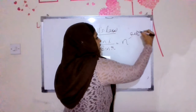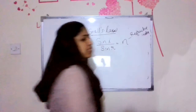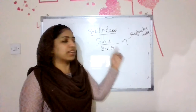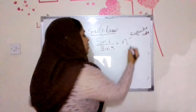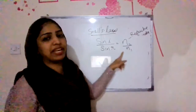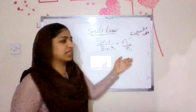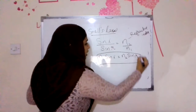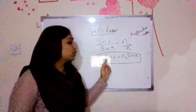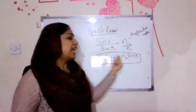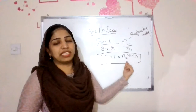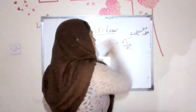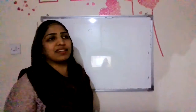This constant is the refractive index. We use the symbol n. So sine i divided by sine r equals n, which is N2 by N1. N1 is the refractive index of the medium through which the incident ray passes, and N2 is the refractive index of the medium through which the refracted ray passes. Therefore, N1 sin i = N2 sin r. This is very important.